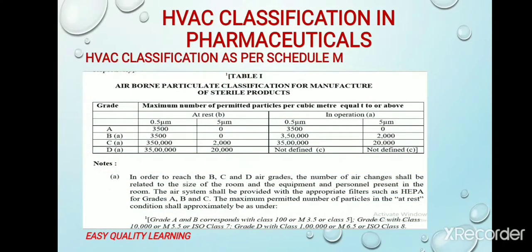This is a snapshot taken from Schedule M. You can see different classes are specified — A, B, C, and D — in which 0.5 micron and 5 micron particles are specified, with the number of particles at rest and in operation given. In Class A and Class B, the particle numbers are the same at static conditions, but in working conditions, Class B allows more particles. These limits are specified for one cubic meter of air.